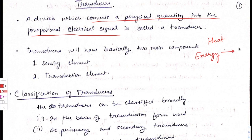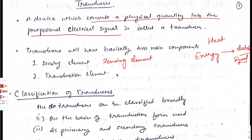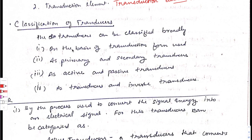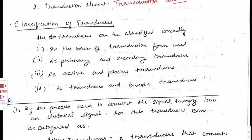Transducers basically have two main components. The first is the sensing element and the other is the transduction element. Now coming on to the classification of transducers.